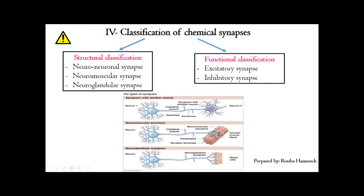We also have the neuromuscular synapse — a synapse between a neuron and a muscle cell. As you can see, the synaptic knobs of the neuron connect with the muscular cell. We also have the neuro-glandular synapse — the synapse between a neuron and a gland cell. According to their function, synapses can be excitatory, allowing the transmission of the message, or inhibitory, blocking or inhibiting the transmission of the message.